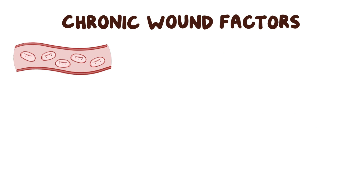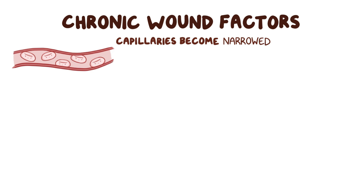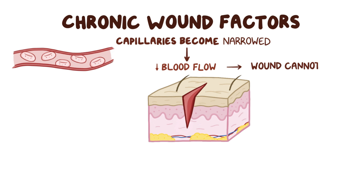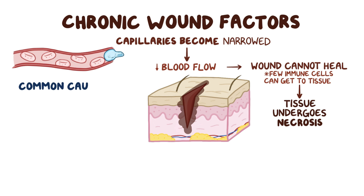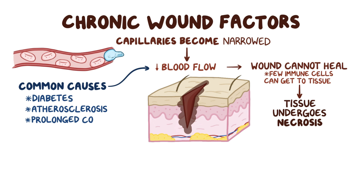There are some factors that prevent proper healing and can lead to chronic wounds. When the smallest blood vessels, called capillaries, become narrowed by some disease process, blood flow decreases. When this occurs, the wound cannot heal properly because fewer immune cells are getting to the damaged tissue, and the damaged tissue has a hard time getting nourished by oxygen and nutrients needed for repair. Since the tissue cannot repair itself, it undergoes necrosis, where cells die prematurely. Some common causes of decreased blood flow include diabetes, atherosclerosis, and prolonged compression.